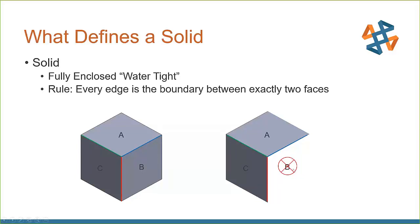If we remove face B, the blue edge is only the boundary for face A and no other face. SOLIDWORKS calls this an open edge, and this can only happen if you're working with surface geometry.